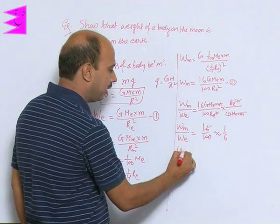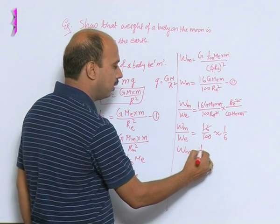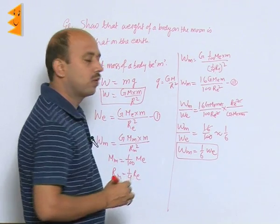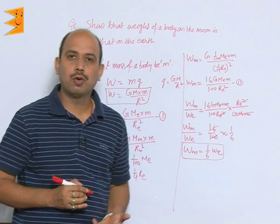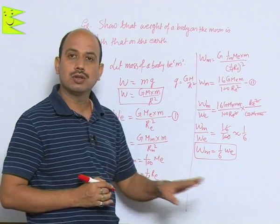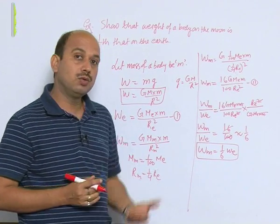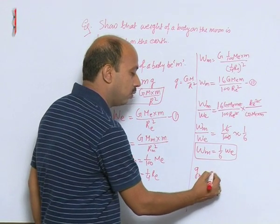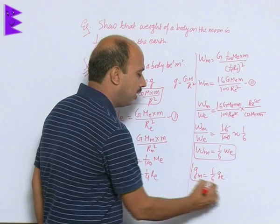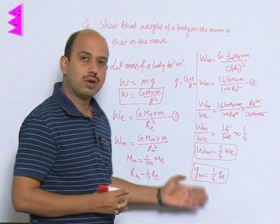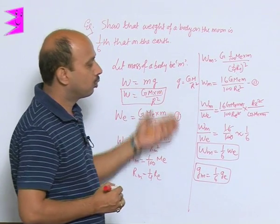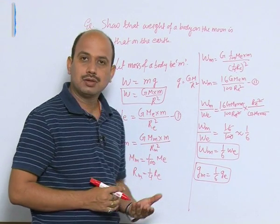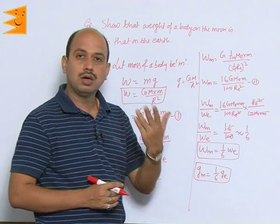So we can write W_m equals 1/6 of W_e. This shows that the weight of a body on the moon is 1/6 that on the earth. Similarly, you can prove that g on the moon equals 1/6 of g on the earth — this relation can also be derived using the same concept. This is about the change in weight from the earth to the moon.